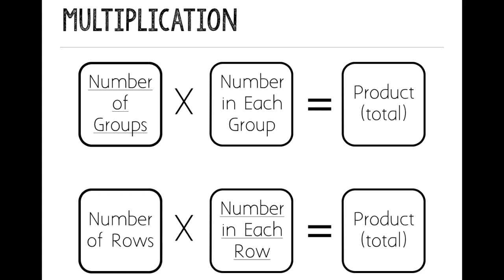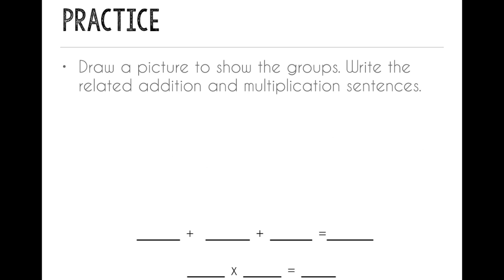Sometimes for multiplication we might arrange things in rows. Then you take your number of rows, and you multiply it by the number in each row, and that equals your product or your total. So let's practice. Draw a picture to show the groups. Draw three groups, and then write the repeated addition and multiplication sentences. Three groups of six. So take a minute and draw three groups with six objects inside each group.